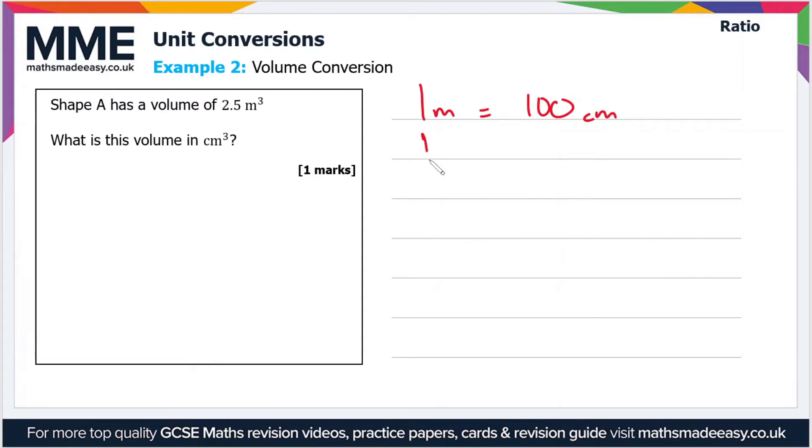Well, 1 meter is 100 centimeters. 1 meter squared is 100 times 100 centimeters, which is 10,000 centimeters squared. And 1 meter cubed is 100 times 100 times 100, which is 1 million centimeters cubed.